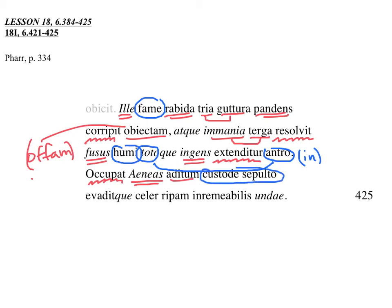Custode sepulto, this is an ablative absolute, with the guardian having been buried, meaning buried in sleep. Virgil used this expression to describe the Trojans when they were buried in sleep, right before the Greeks came upon them to attack them at night and burn their city. Buried in sleep, sepulto. Sepulchrum is a tomb, so entombed, as if dead in sleep. With the guardian buried.